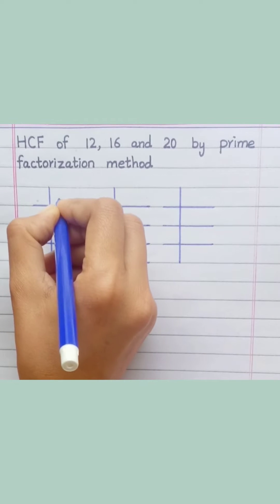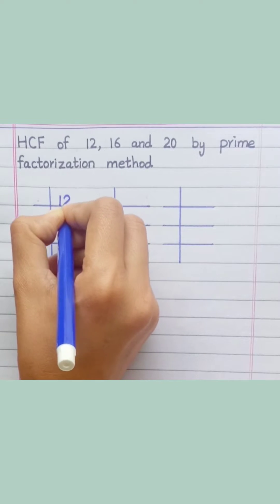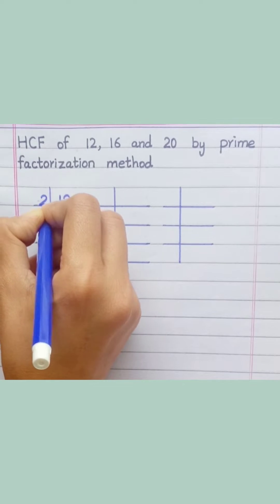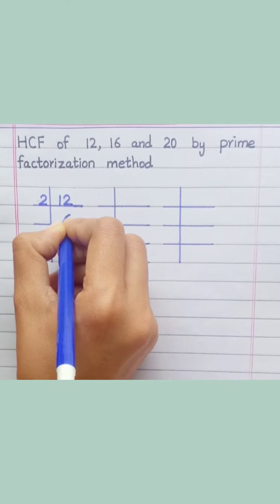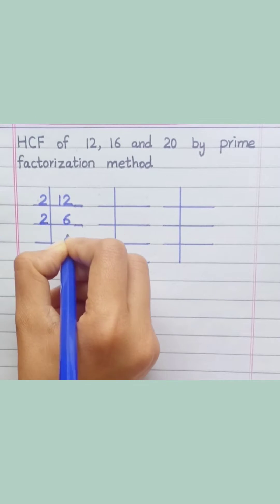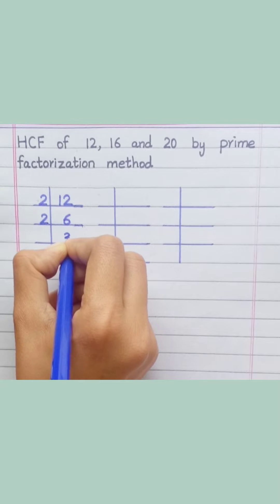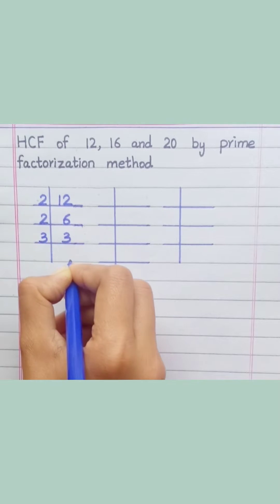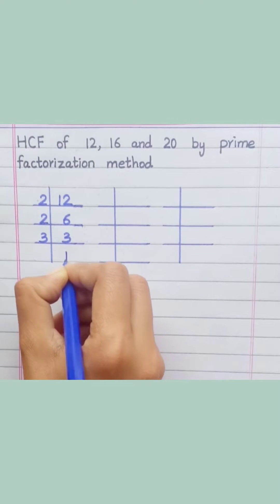12: 2 sixes are 12, 2 threes are 6, 3 ones are 3.